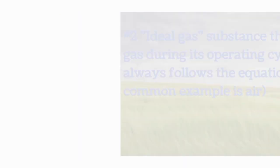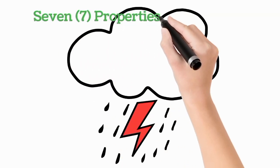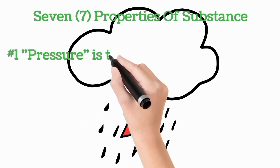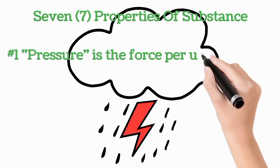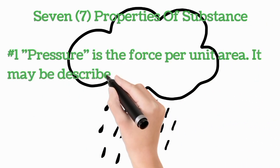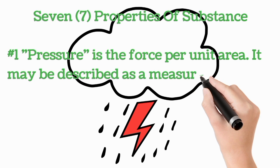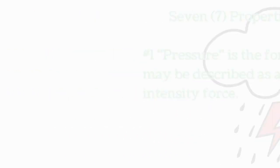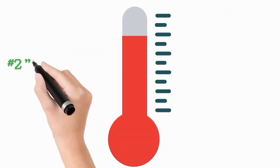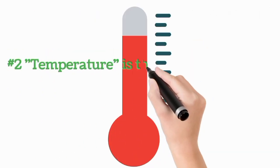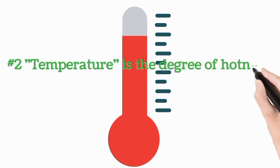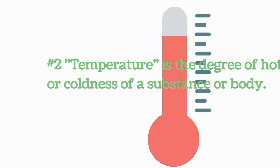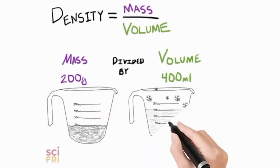There are seven properties of substance. Number one is pressure. Pressure is the force per unit area. It may be described as a measure of the intensity of force. Number two, temperature. Temperature is the degree of hotness or coldness of a substance or body. Number three, density, specific volume, and specific gravity.